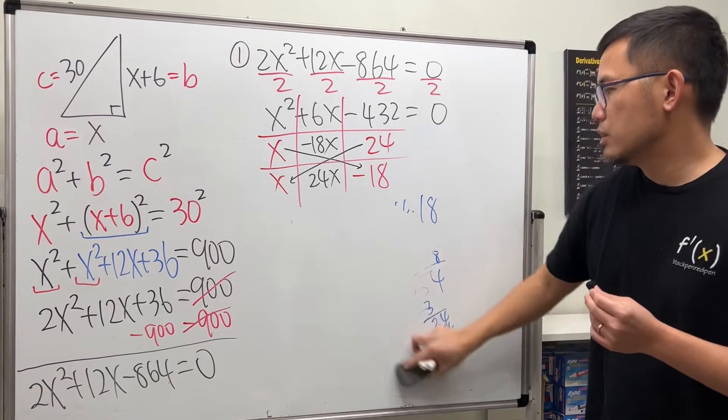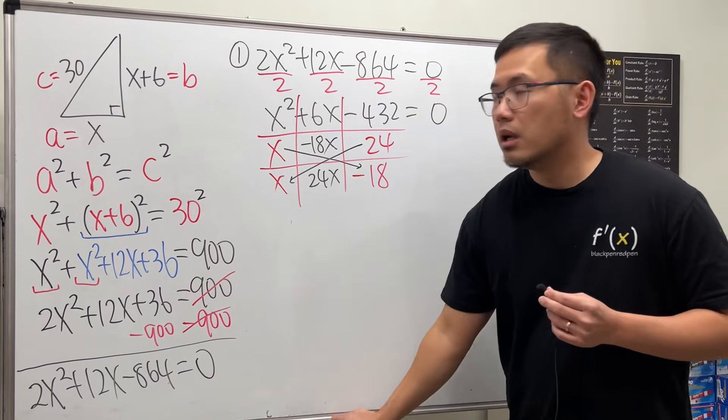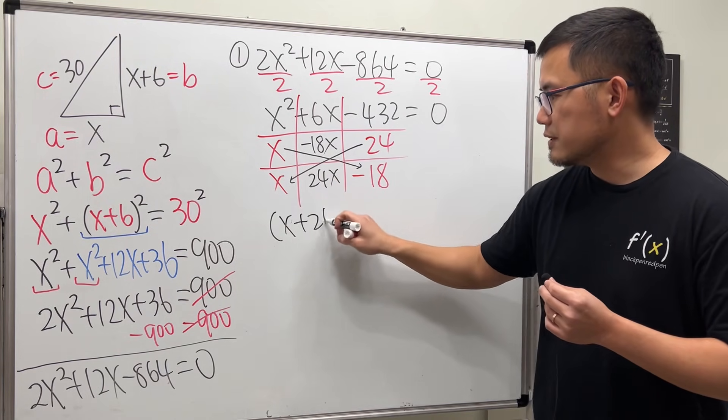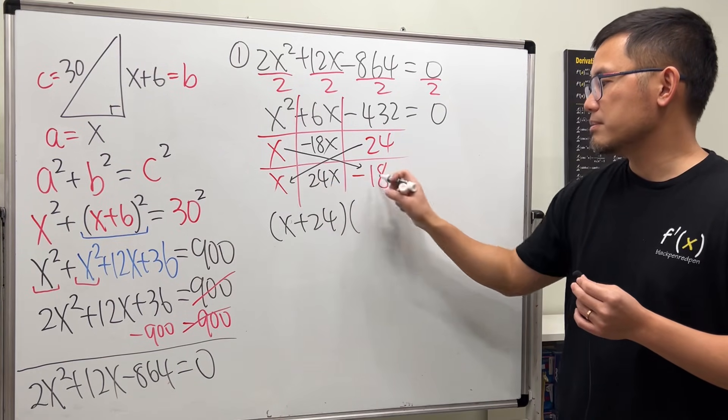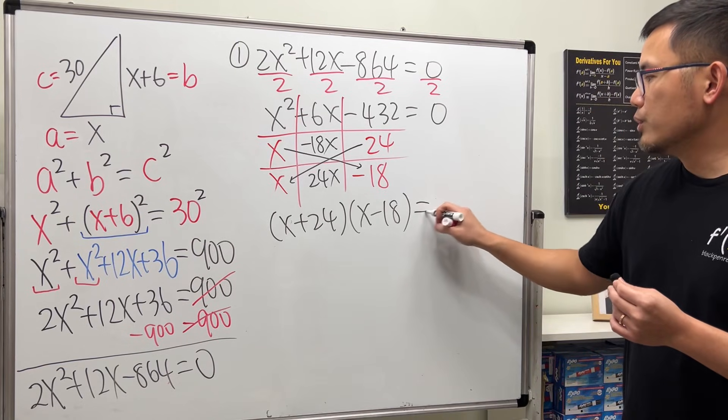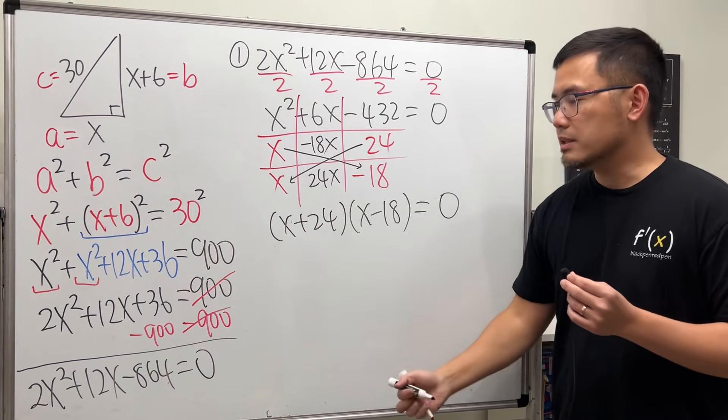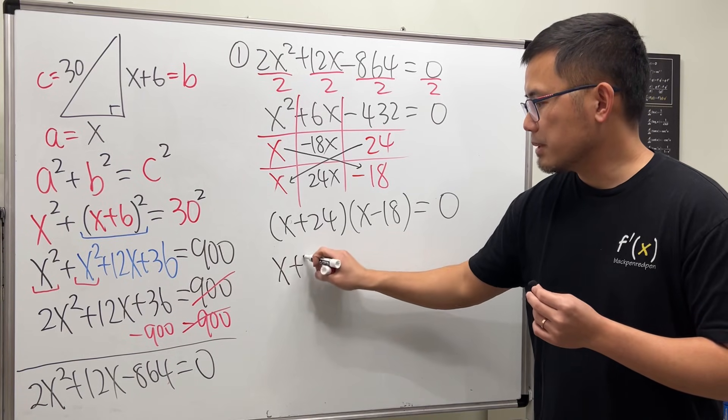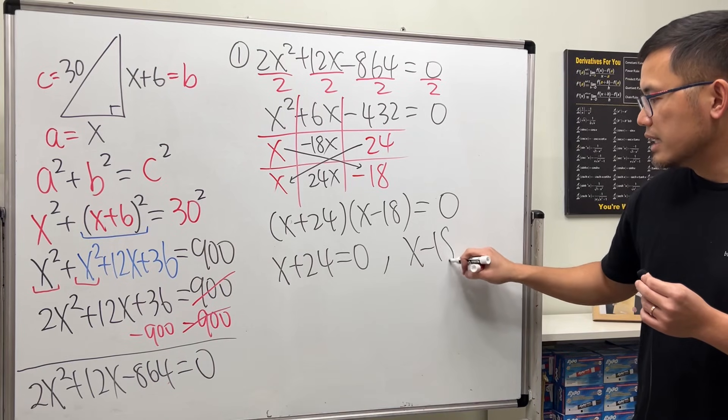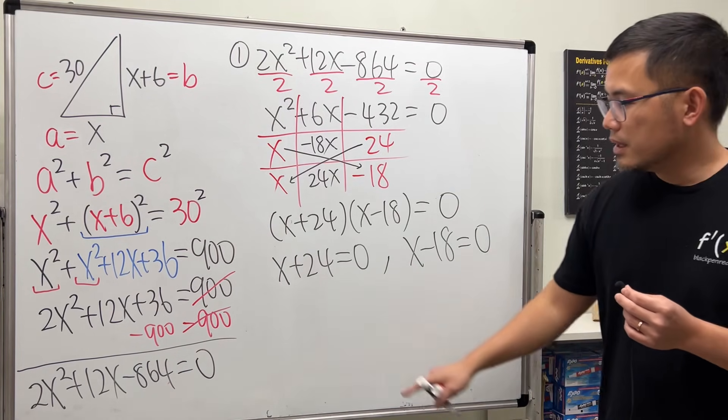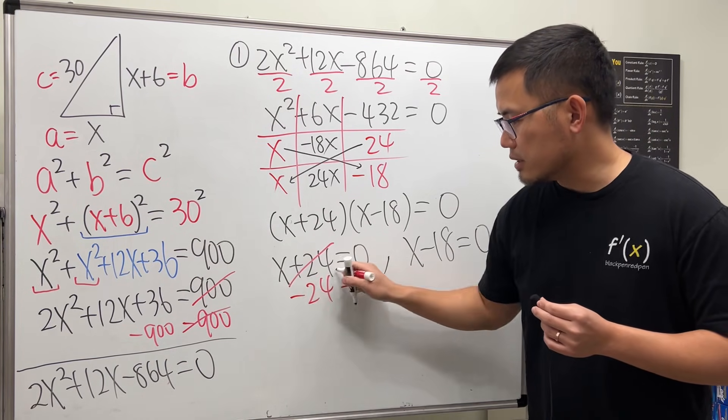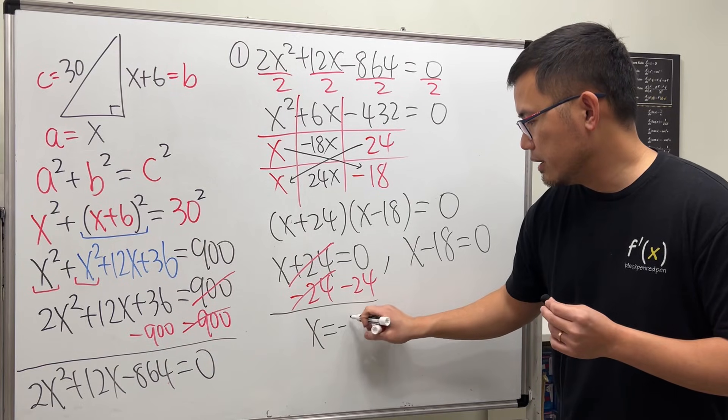So, once you have this, you can just proceed. We can factor this equation and we get (x + 24). That's the first factor. Times the other factor is (x - 18). That is equal to 0. Once we have this, we can set the first factor equal to 0. So, x + 24 = 0. And then, set the second factor, x - 18 = 0. To solve for x here, subtract 24 on both sides. They cancel. And then, we get x = -24.